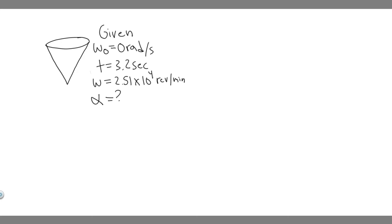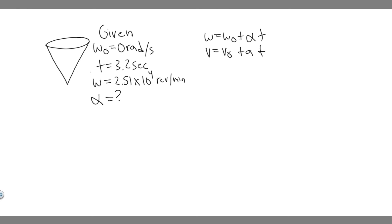Notice what we're given: we have omega-zero, we have T, and we have omega, and we're trying to find alpha. So the equation that comes to mind is omega equals omega-zero plus alpha times T. From kinematics, this is just V equals V-sub-zero plus A times T, but we're replacing them with rotational kinematic variables. You should know kinematics, so we just need to plug the numbers into this equation.